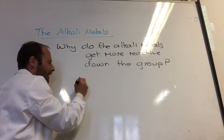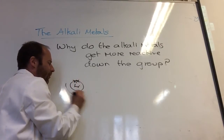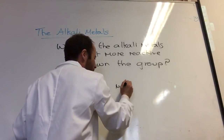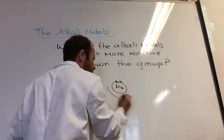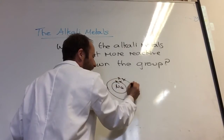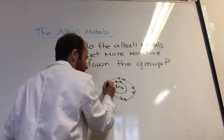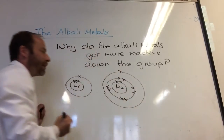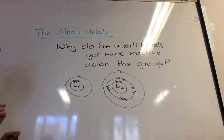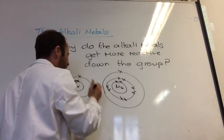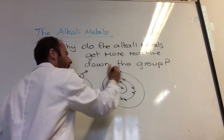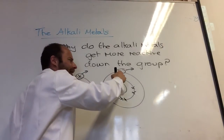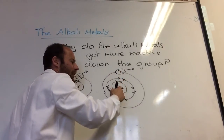Let's have a look at lithium. Lithium has got two electrons in the first shell and then one electron. Sodium has got two electrons, then eight electrons, and then one electron. And then potassium is even larger. So if I just compare lithium and sodium — in lithium it's that electron that goes, and in sodium it's that electron that goes. What do you notice about this electron's distance from the nucleus?